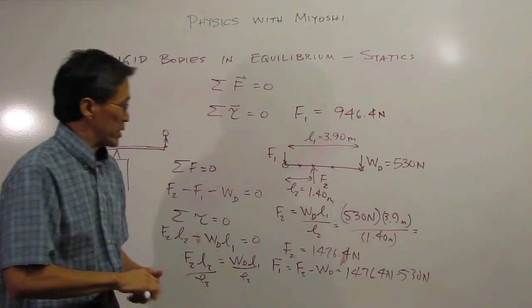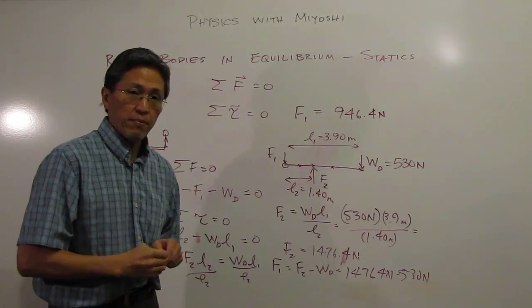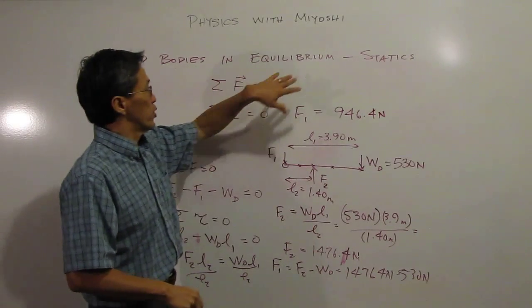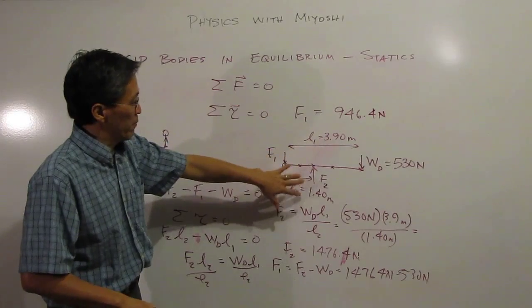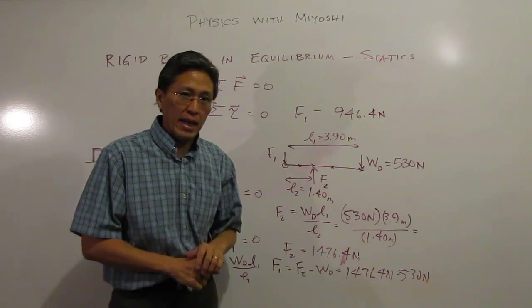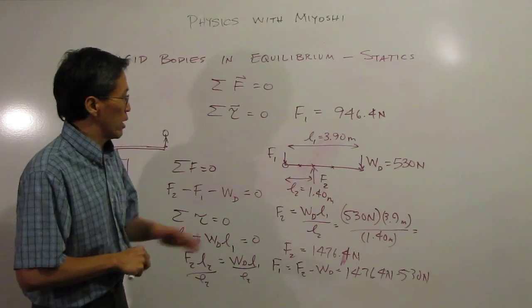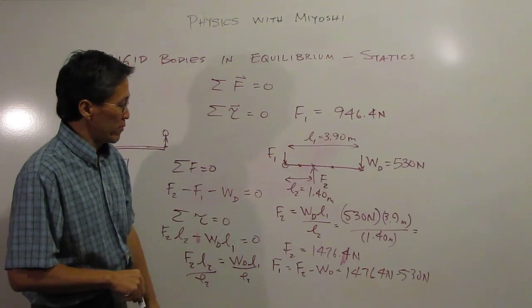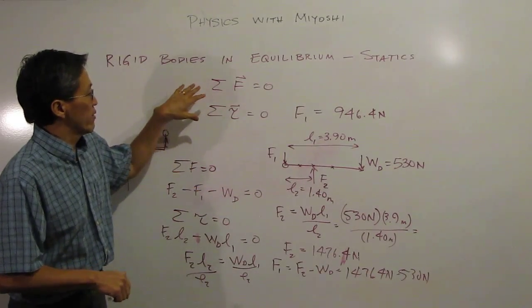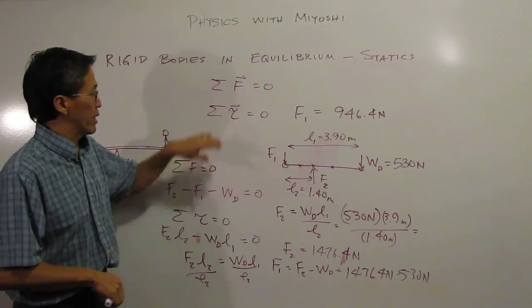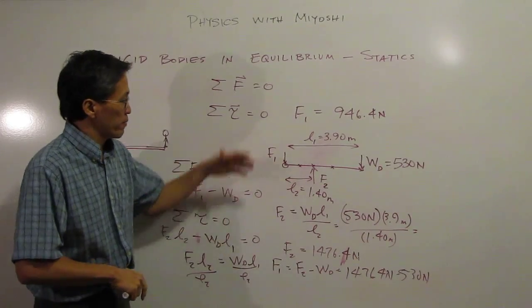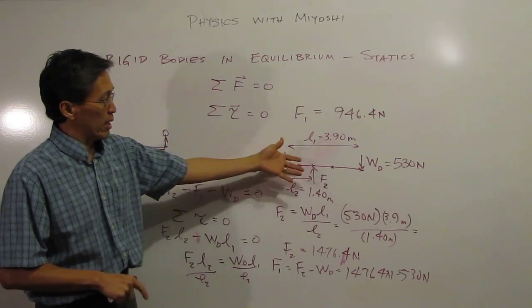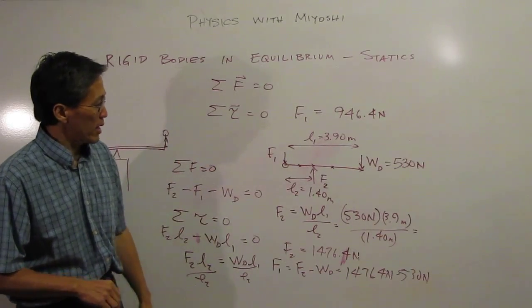So that's a very simple example of how we can use statics, how we can use torques and forces to figure out what our final forces are in a static equilibrium condition where nothing is moving. We're not rotating nor are we translating. So we can figure things out simply by knowing that the sum of our forces has to be zero and the sum of our torques must be zero. Plugging in our numbers, making a couple of equations and plugging in numbers. This time was very simple.